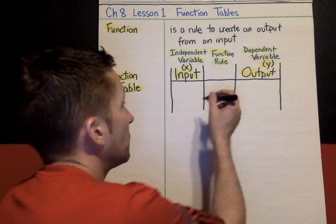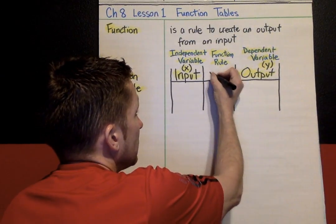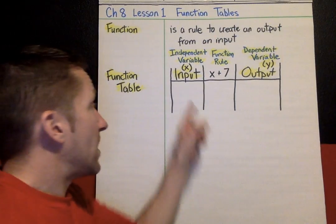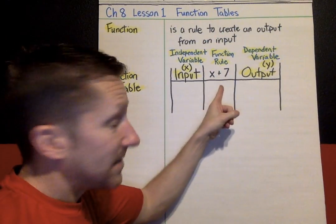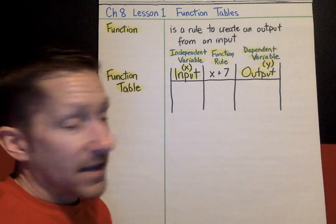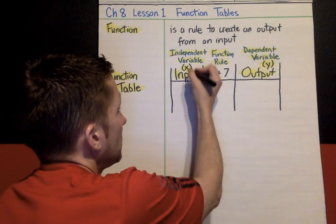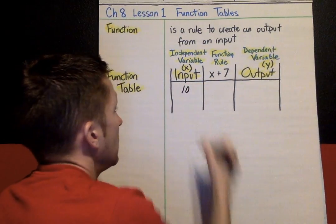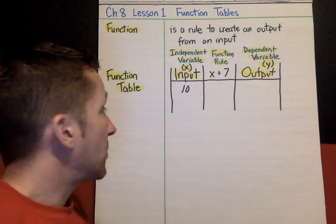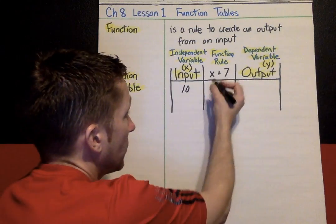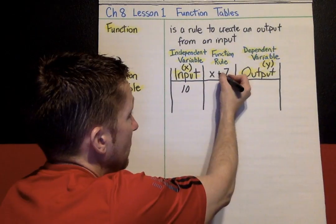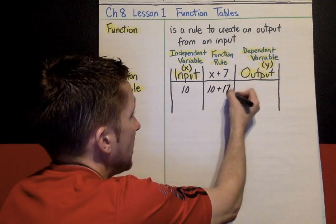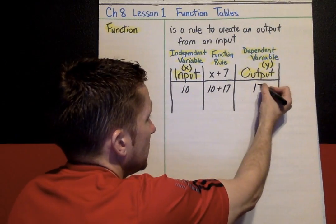Let's put a function rule in here. Function rule is x plus 7. That means whatever our x value is, we're going to add 7 to it, and that's going to give us our output. Let's list some x input values. If we have an input of 10, all we're going to do is put in a 10 for the x, and we're going to add 7. We're using the function rule. So 10 plus 7, our output is 17.